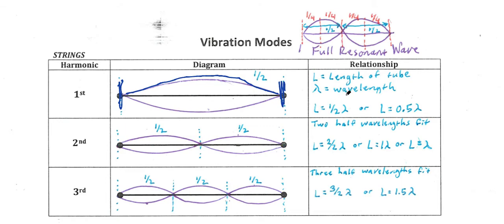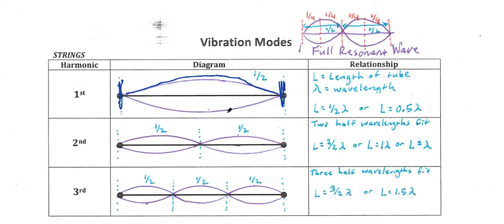From there, I could figure out all sorts of cool stuff — like the frequency of this wave. If I plugged it back into our V equals lambda F equation, now I know the wavelength and I know the speed of sound that travels across this string. Speed of sound is around 340-ish meters per second, though that does change with environment. Then I could figure out what frequency this actually vibrates at, which would correspond to an actual musical note.